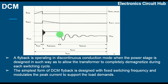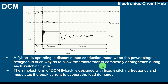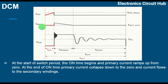During the demagnetizing time, the transformer is completely demagnetized. The simplest form of DCM flyback is designed with a fixed switching frequency and modulates the peak current to support load demands. So in DCM mode, the flyback works at a fixed switching frequency and modulates the primary peak current.